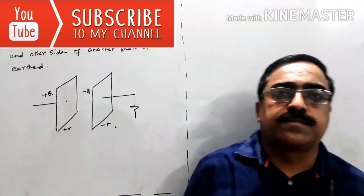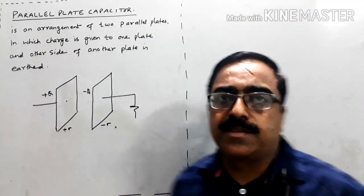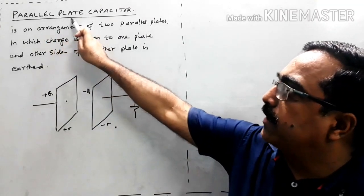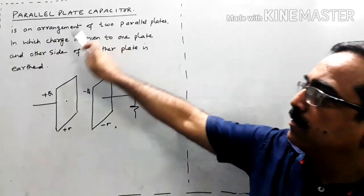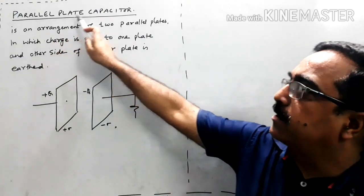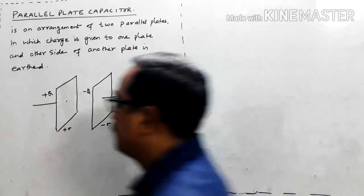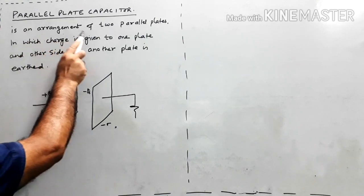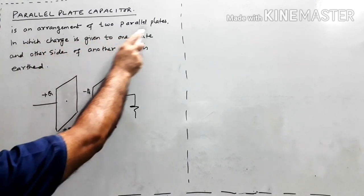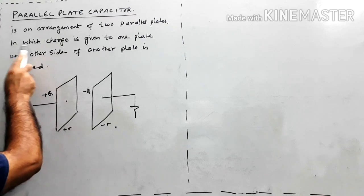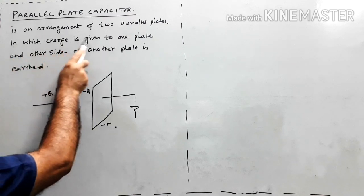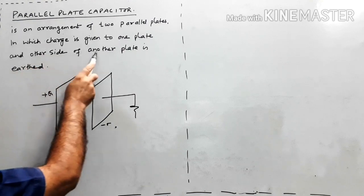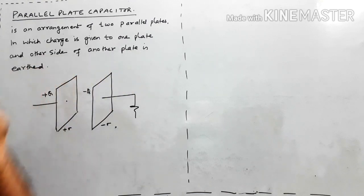Good morning students. Today our topic is parallel plate capacitor. Parallel plate capacitor is an arrangement of two parallel plates in which charge is given to one plate and the other side of another plate is earthed.